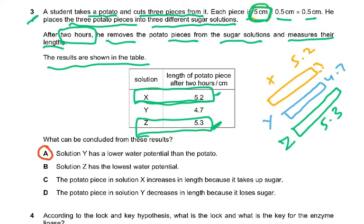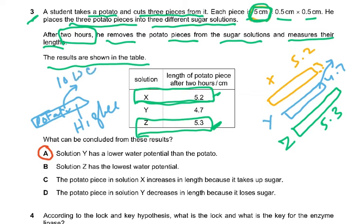X increased to 5.3 and Z to 5.2. In Y, they became shorter, meaning water moved out of the cells and they shrank. Solution Y has a lower water potential than the potato — water moved out from higher water potential inside to lower outside. That is why it has shrunk. The other answer options are wrong.